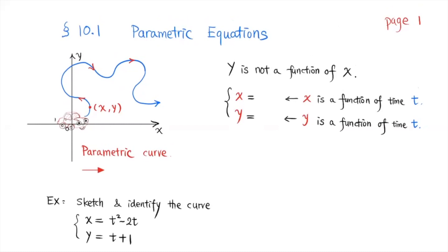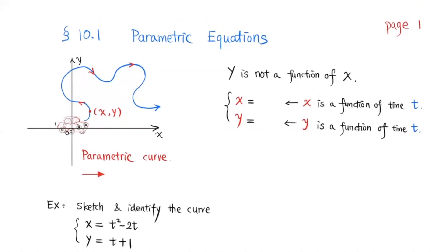In section 10.1 we're going to talk about parametric equations. Imagine that you have a car traveling on a coordinate plane — the xy plane. Looking at the curve that this car travels, y is not a function of x because it doesn't pass the vertical line test. If you draw a vertical line, it's going to intersect the curve more than once, so y is not a function of x.